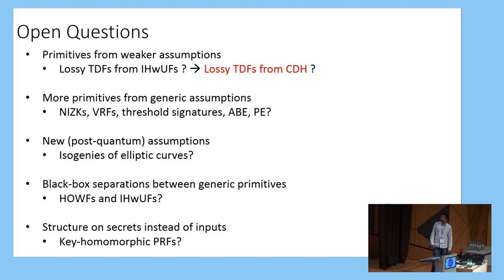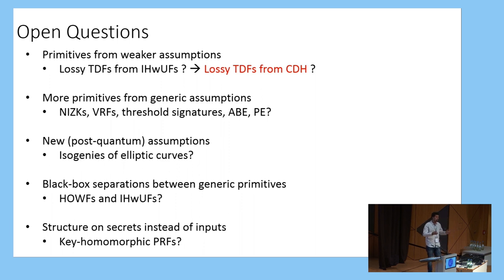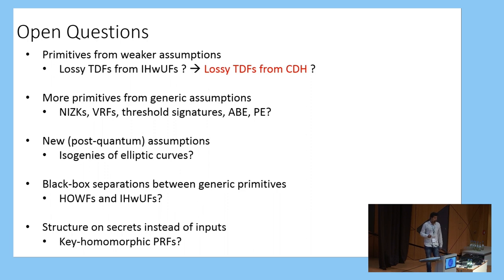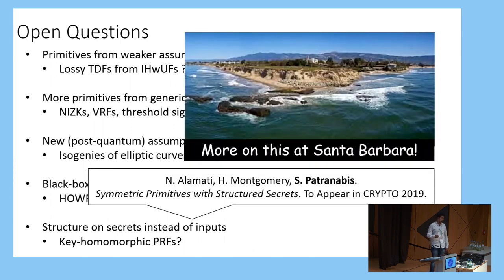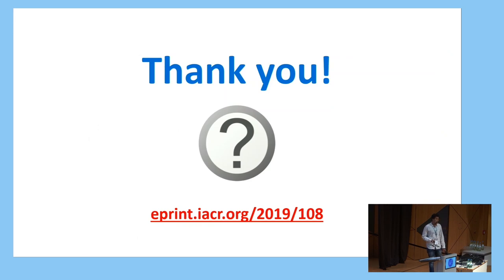I'd like to end with some open questions. First, can we show black-box separations between the generic primitives discussed — for example, is a homomorphic one-way function black-box separated from an input-homomorphic weak unpredictable function? This could divide cryptomania into different 'continents,' each with a complete primitive. Second, can we consider other symmetric-key primitives with structure — for instance, structure on the secret space rather than the input space, such as key-homomorphic PRFs? We have made some progress on this last question, with a result to appear at Crypto 2019. Thank you, and I'd be happy to answer questions.